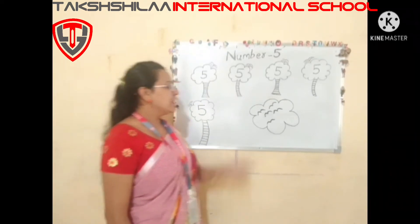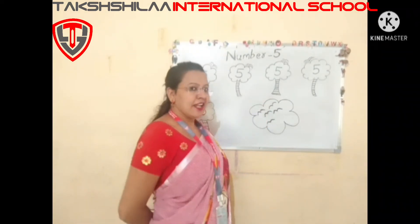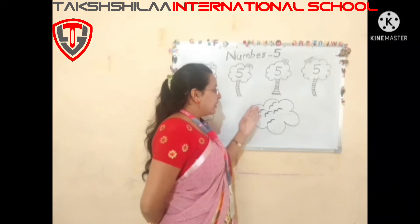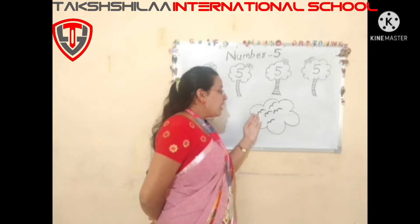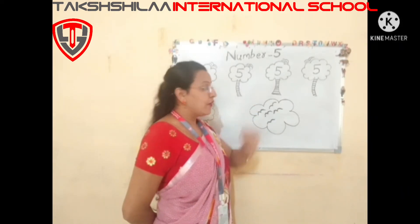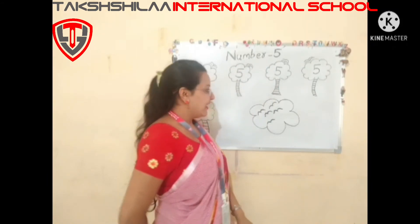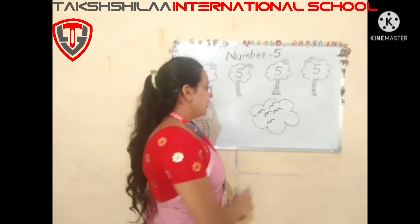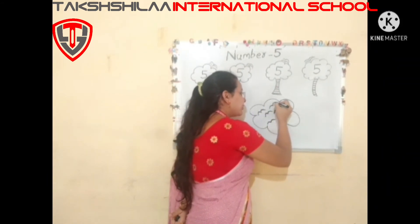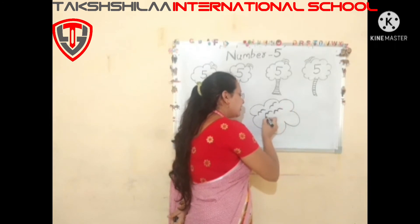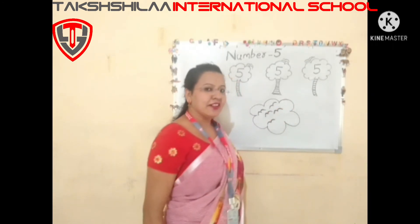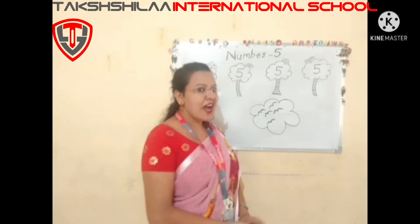You can see the sky. There are five birds flying in the sky. Let's count: one, two, three, four, and five. This is number 5.